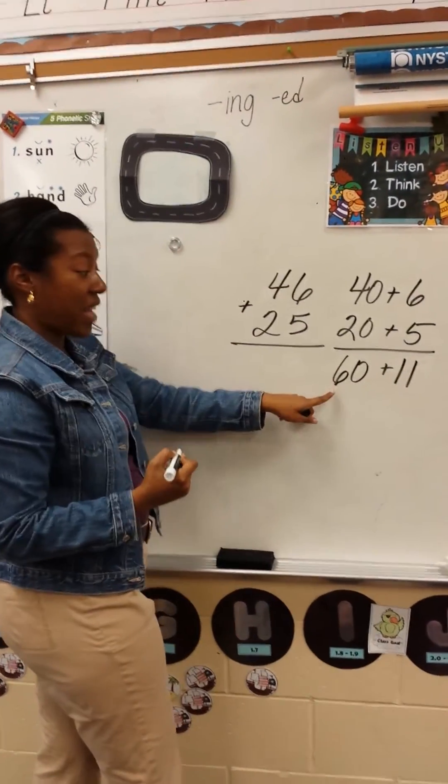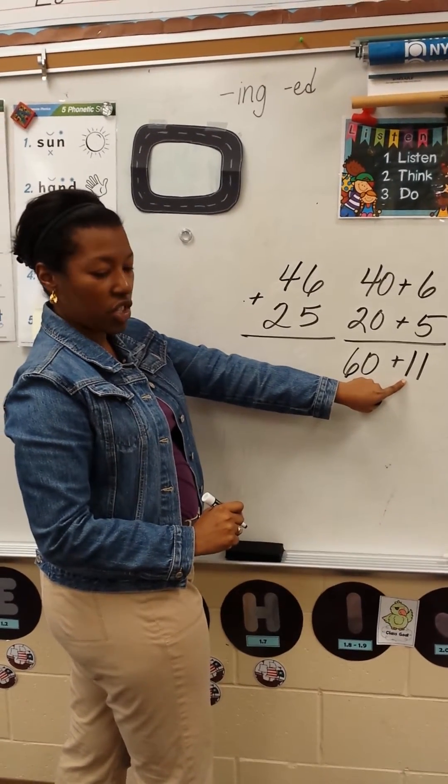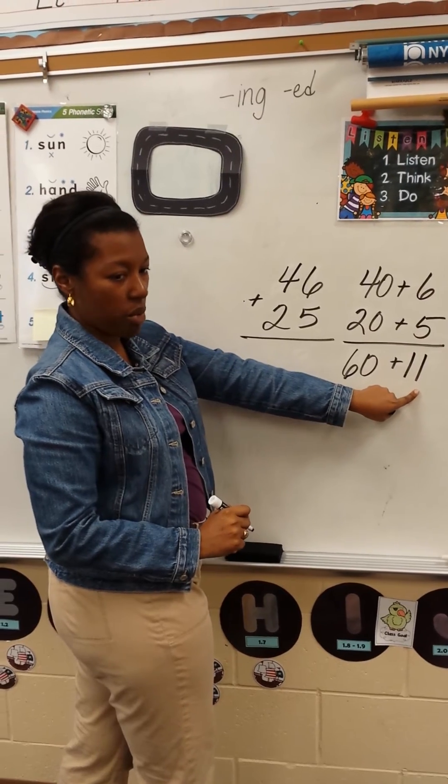Now, let's add 60 plus 10. Someone raise your hand. Serenity? 70! Good job! 70 plus 1 more.